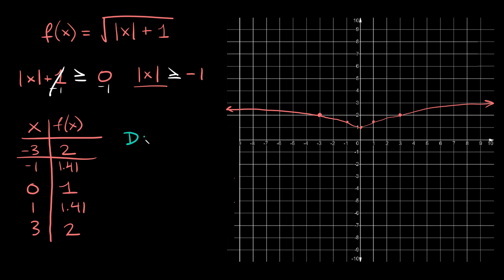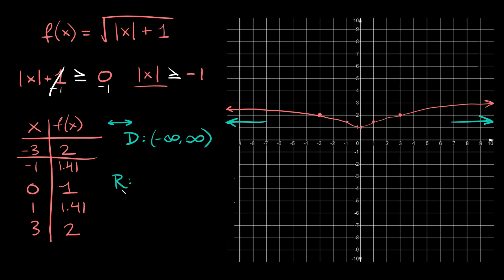Now let's take care of the domain and range. The domain represents your x value limits. You can see that the x values go from negative infinity toward positive infinity — there's no constraint. This graph covers every x value you could possibly think of, so we write it as all real numbers, or in interval notation: negative infinity to positive infinity.